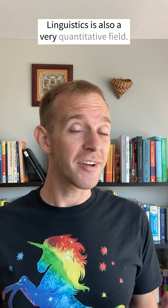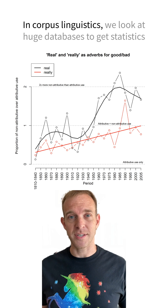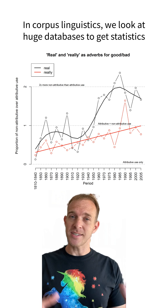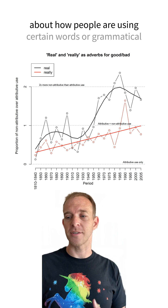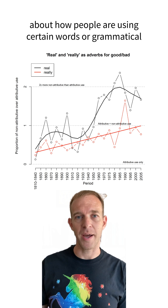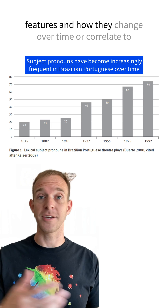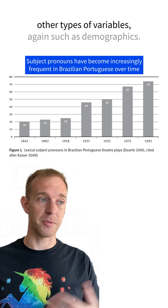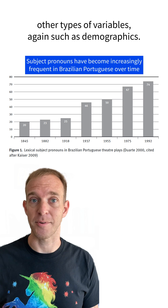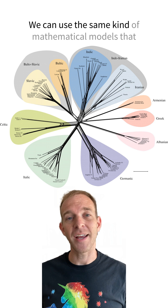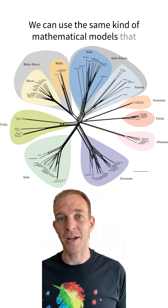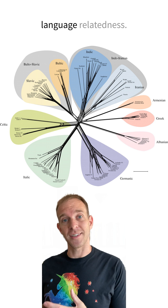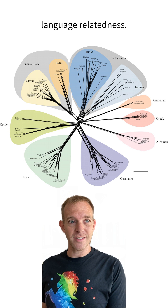Linguistics is also a very quantitative field. In corpus linguistics, we look at huge databases to get statistics about how people are using certain words or grammatical features and how they change over time or correlate to other types of variables, such as demographics. We can use the same kind of mathematical models used in phylogenetics and biology to look at language relatedness.